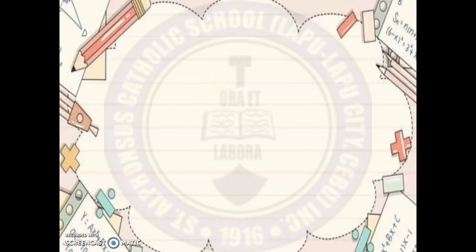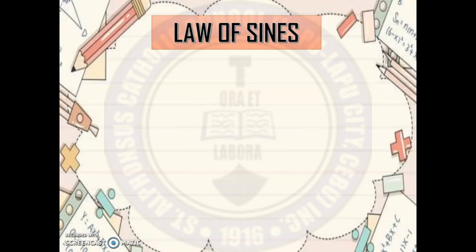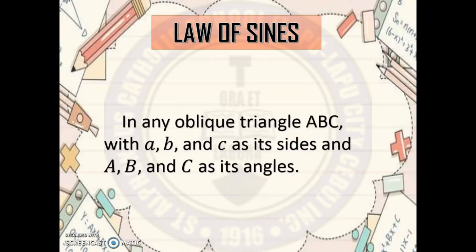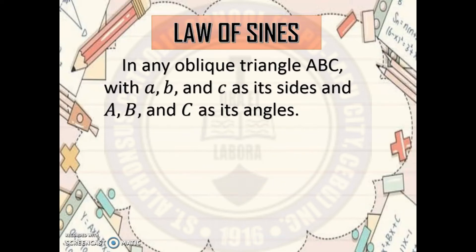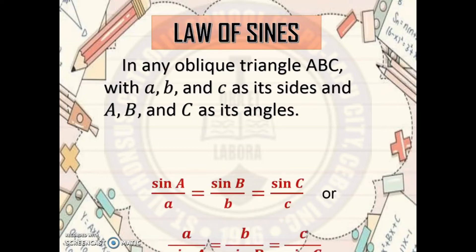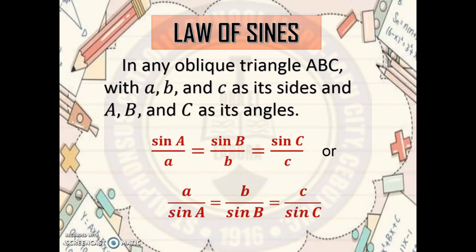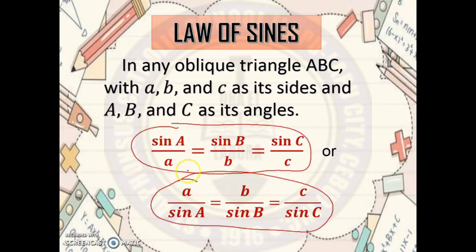For Cases 1, 2, and 3, you're going to use the Law of Sines. What is stipulated in the Law of Sines? It says: in any oblique triangle ABC, with A, B, and C as its sides, and with angle A, angle B, and angle C as its angles, then you will use this formula. Whatever formula you use — either form — you will arrive at the same answer. Let's try to use the Law of Sines in solving some problems.